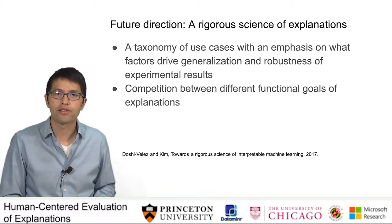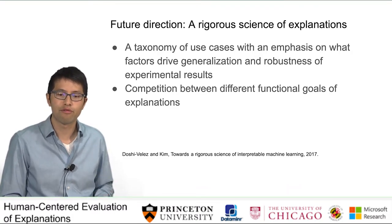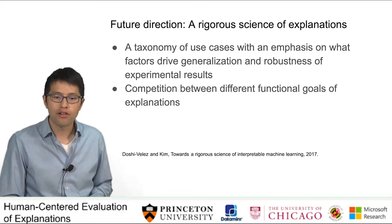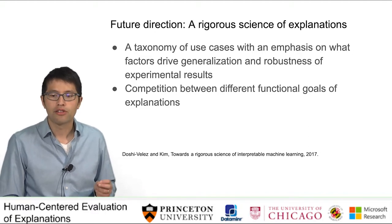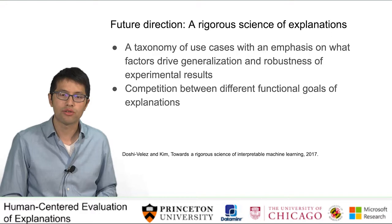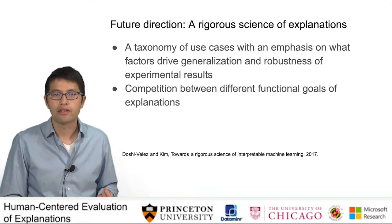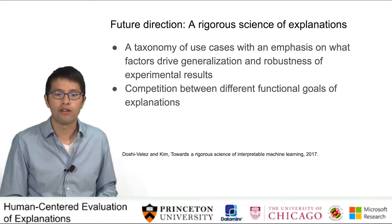The area of evaluating explanations is still nascent. The first future direction is to collectively build towards a rigorous science of explanations, which resonates with the inferential work by Dosh Velas and Kim. First, it will be very useful to develop a taxonomy of use cases with an emphasis on what factors drive generalization and robustness of experimental results — for example, does a study on deception detection generalize to legal document entailment, and why? Second, following our discussion on evaluation constructs, there may be competitions between different functional goals of explanations. Recognizing and understanding such competitions is an important next step, as it is unlikely that a method of generating explanations will dominate in all possible goals. Therefore, it is important to understand potential trade-offs between different goals of explanations.